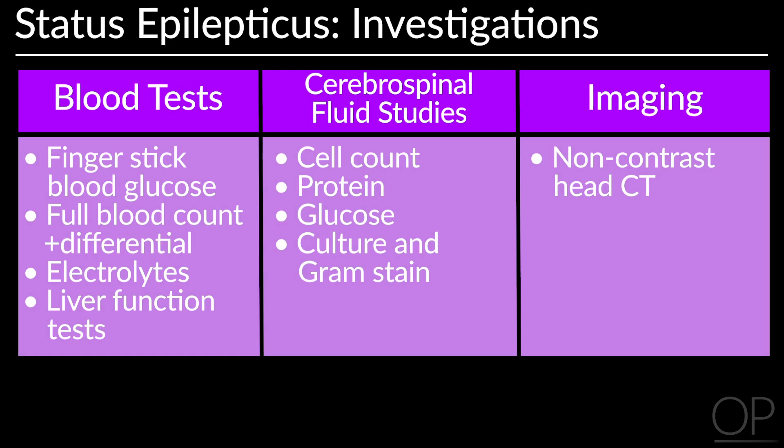While the first priority should be stopping the seizure, you and your team should also be thinking about what may have caused this prolonged seizure. Laboratory testing can help identify metabolic derangements, in particular hypoglycemia and hyponatremia. An FBC may be suggestive of an infection, though keep in mind that the white blood cell count may be elevated with seizure activity. A lumbar puncture, when the patient's seizure is controlled, may be necessary to evaluate for meningitis and encephalitis. If your suspicion for infection is high enough, you should initiate antibiotics and antimalarial treatment.